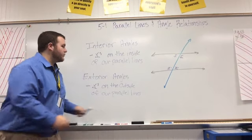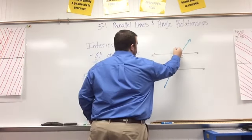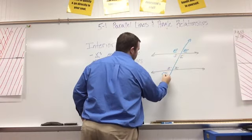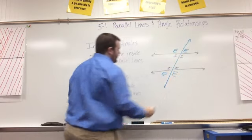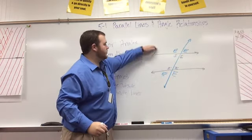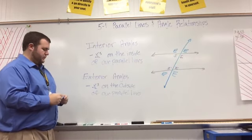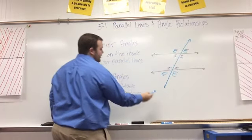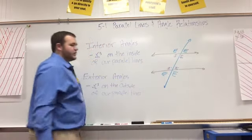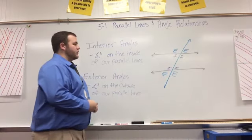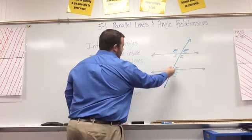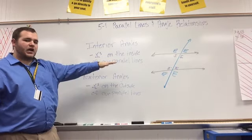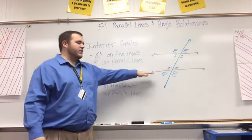I'll label the exterior angles with an E — you can see how they're on the outside of our parallel lines. So to recap so far: we have a transversal, which is the blue line cutting through two parallel lines; vertical angles, which are opposite each other; interior angles labeled with I; and exterior angles labeled with E.